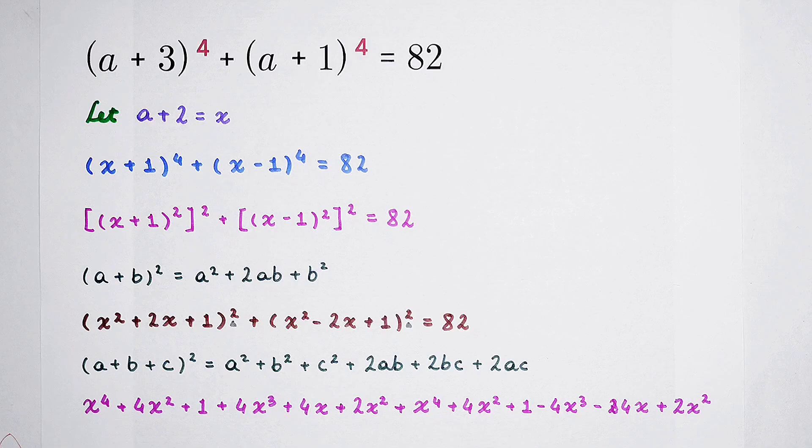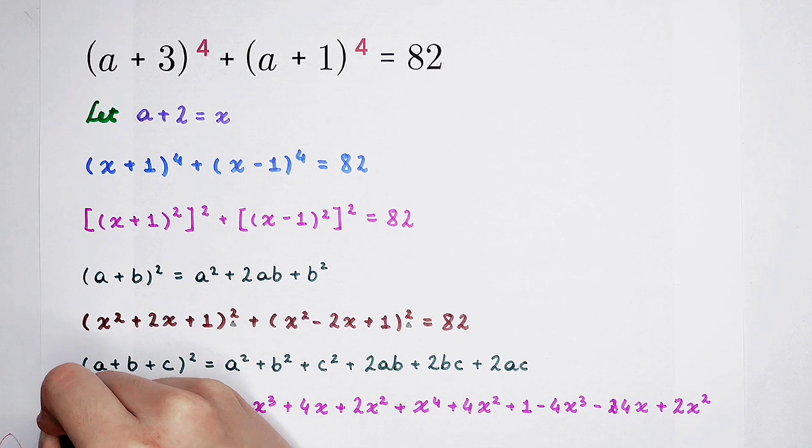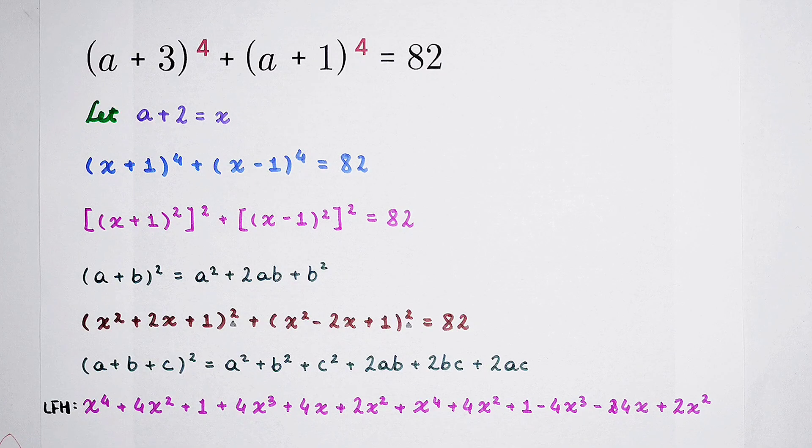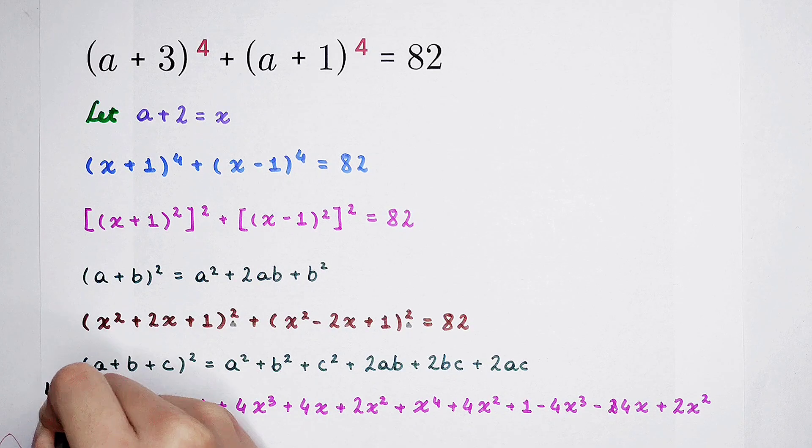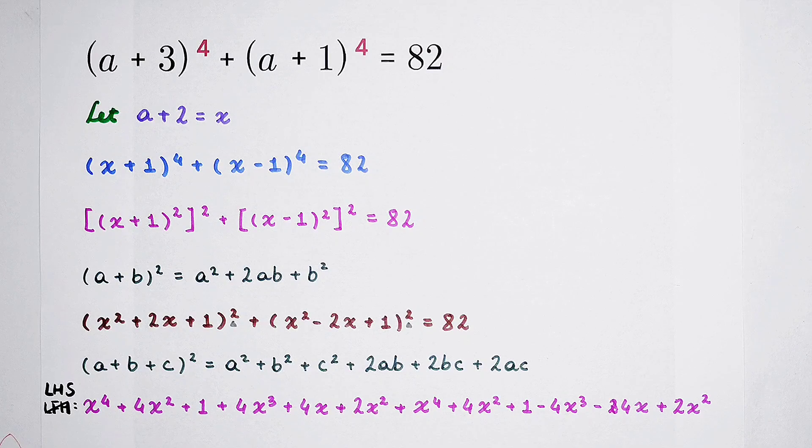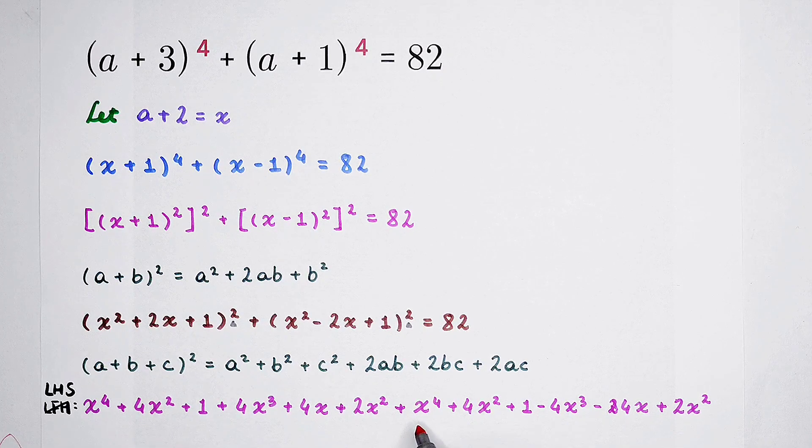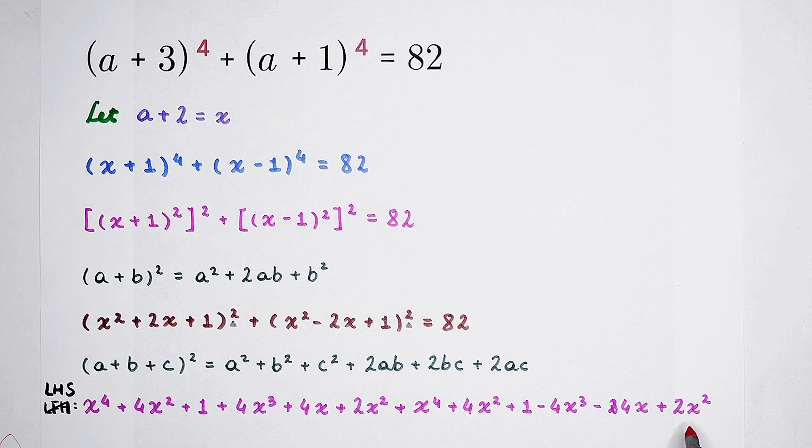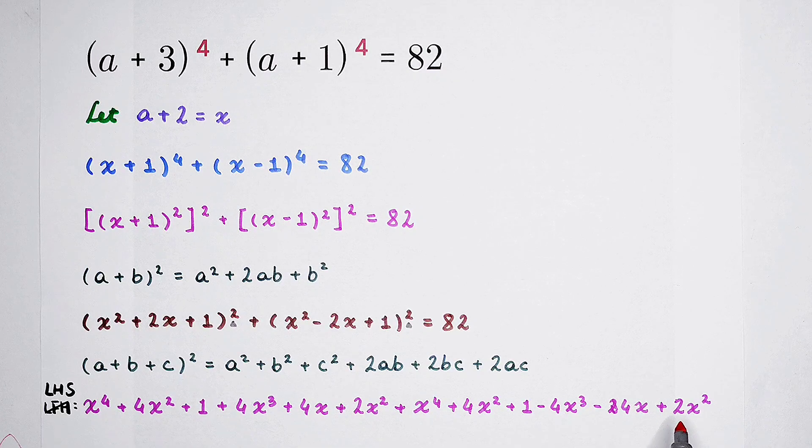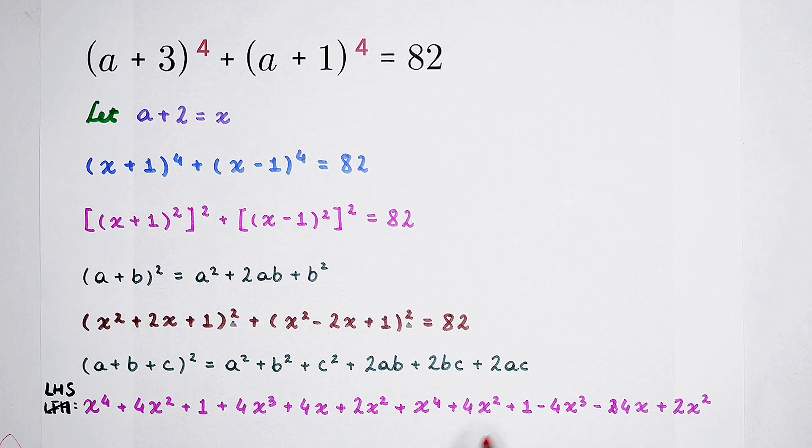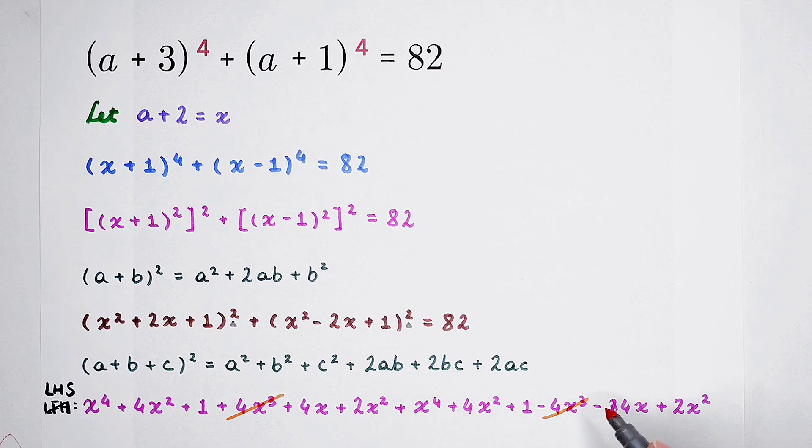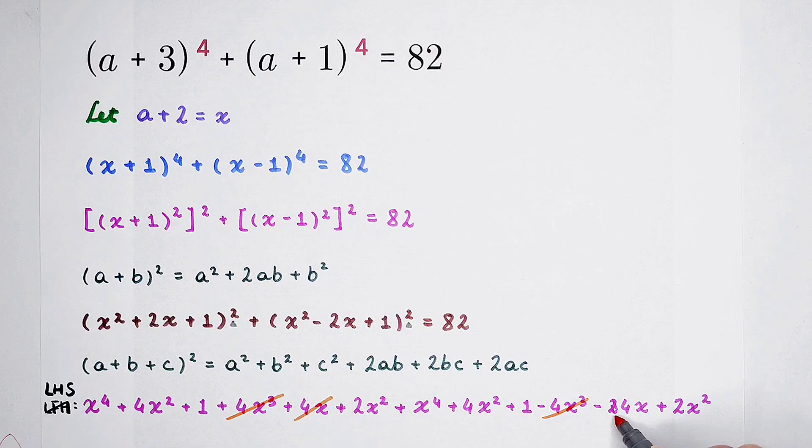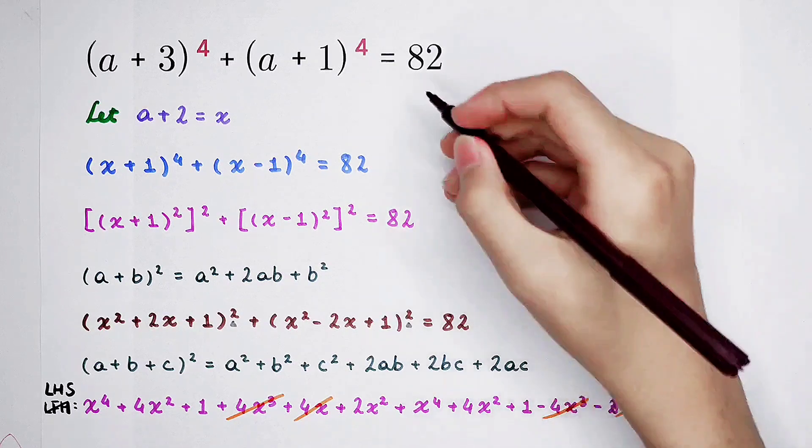Actually, it is LHS. Look: x to the power 4, x to the power 4, two times. 4x squared, 2x squared, 2x squared, 4x squared, 2x squared. That is 12x squared. And then 1 plus 1 plus 2. Here, positive 4x cubed, negative 4x cubed, they can be cancelled. And 4x, negative 4x.